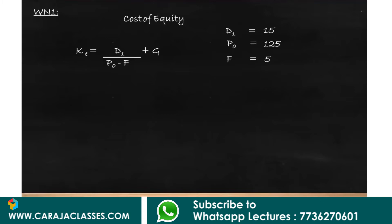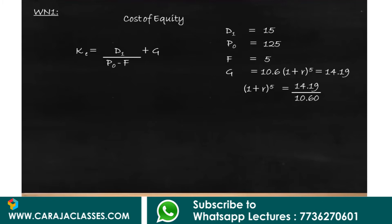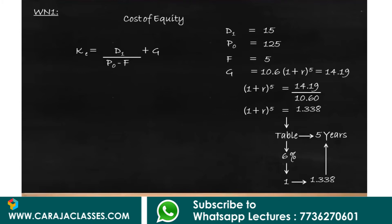In the question, dividend has grown from 10.6 to 14.19 over 5 years. So g is found from: 10.6 multiplied by (1+r)^5 equals 14.19, which gives (1+r)^5 = 1.338. Looking at the compound value table for 5 years, the percentage that gives 1.338 is 6 percent. So the growth rate g is 6 percent.